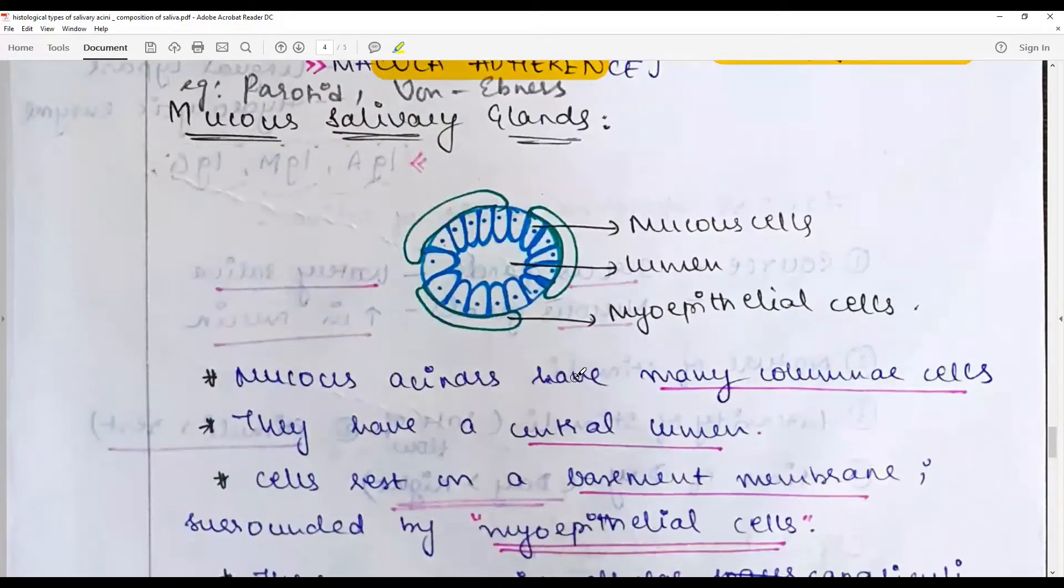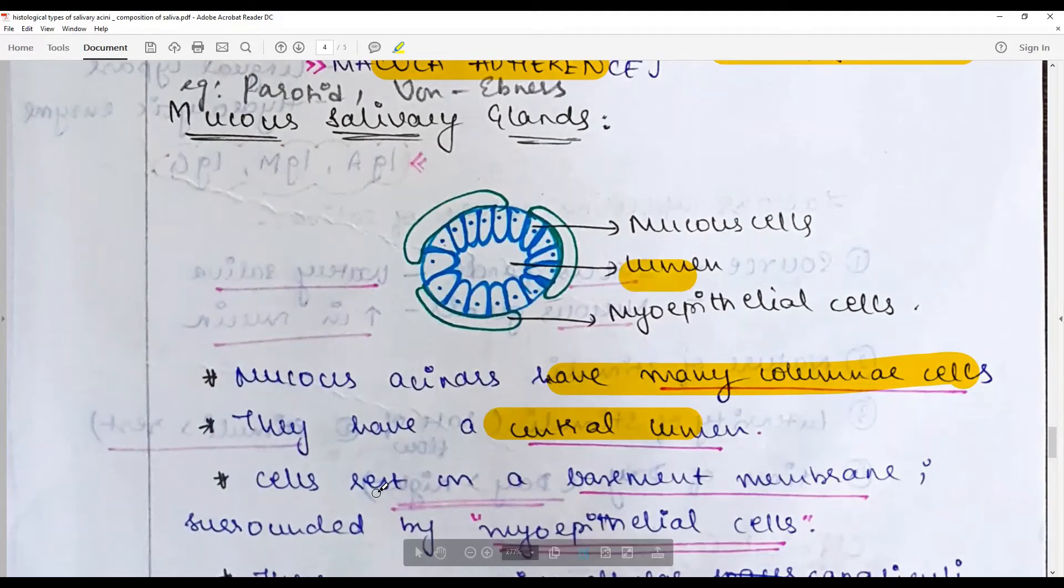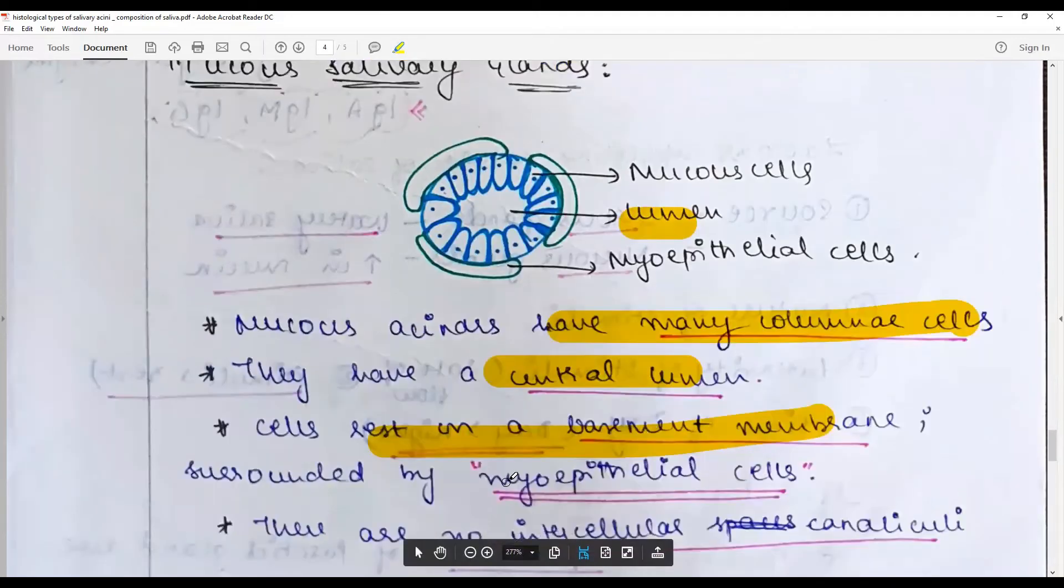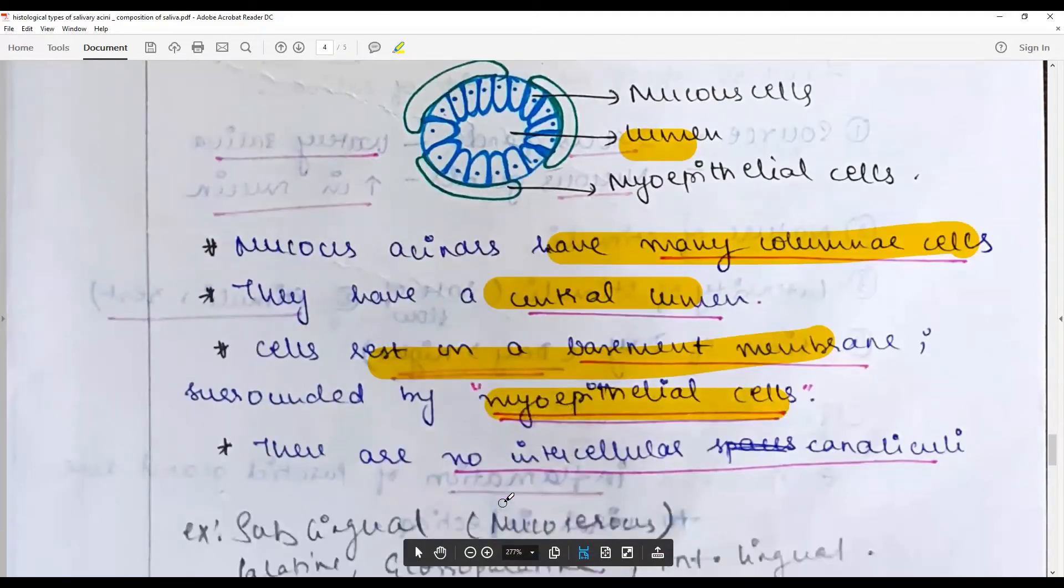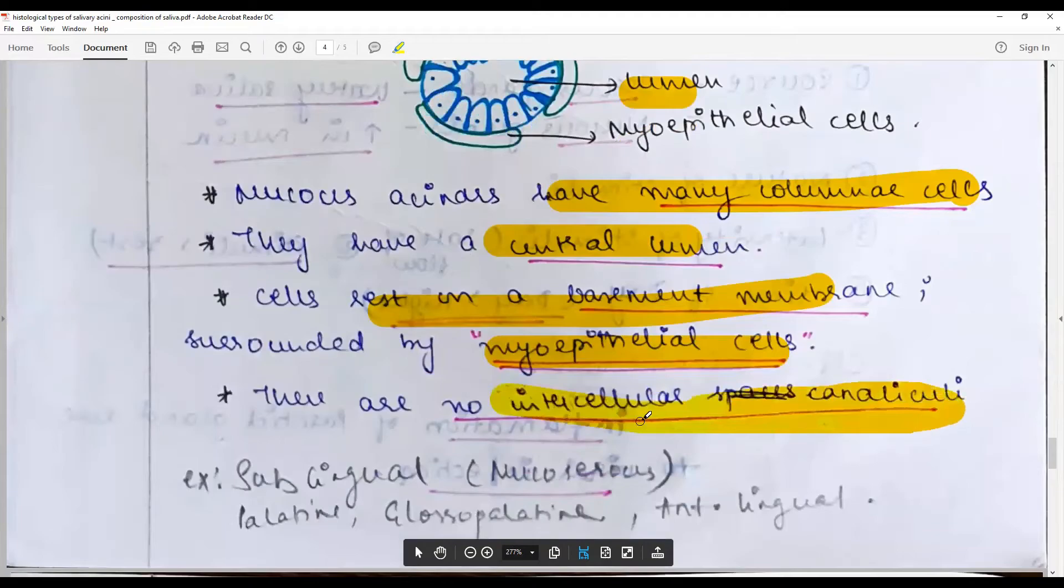Whereas the mucous acini have many columnar cells, not pyramidal cells - flattened columnar cells, central lumen broad, big central lumen. Cells rest on a basement membrane surrounded by myoepithelial cells and they have less intracellular or no intracellular canaliculi.